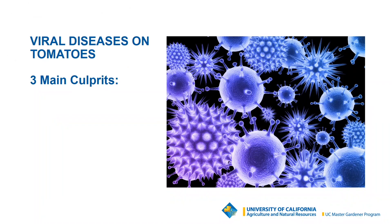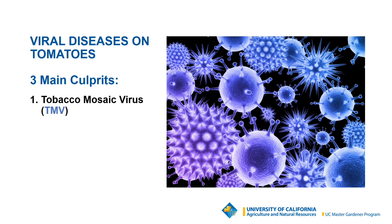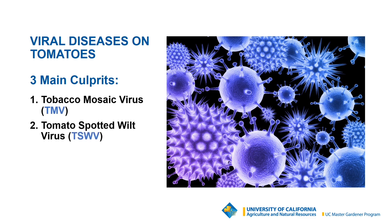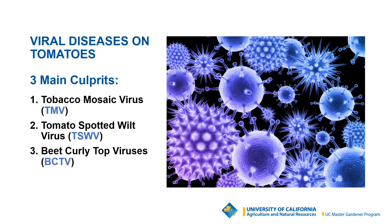There are three main viral diseases that we're going to cover. Of course, there's more than just three out there, but three tend to generate most of the questions to us. The first is tobacco mosaic virus. The second is tomato spotted wilt virus. And the third is the beet curly top viruses.